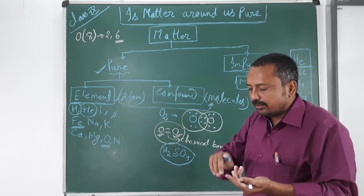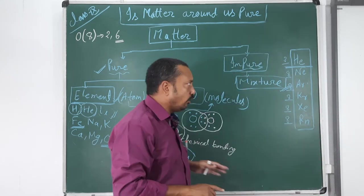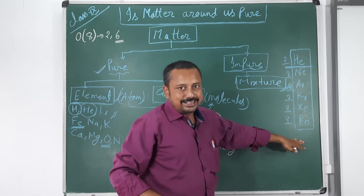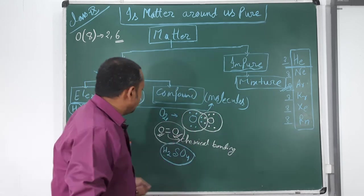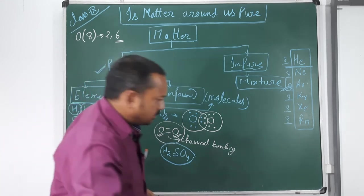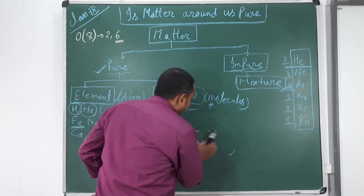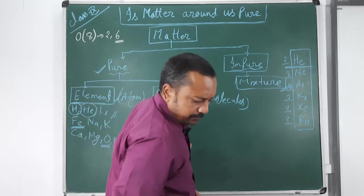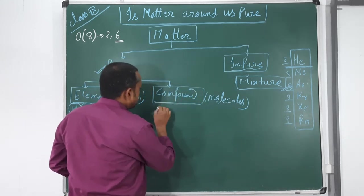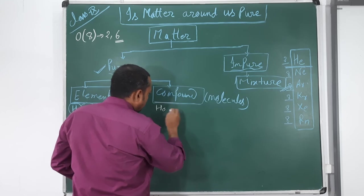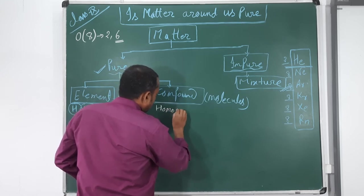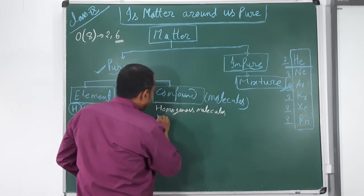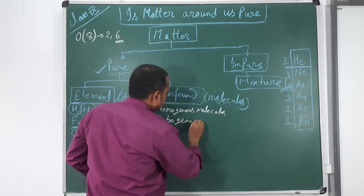By either gain and loss of electrons or by sharing of electrons, all atoms must complete either their duplet or their octet, with some exceptions. These molecules are of two types depending upon the atoms present.